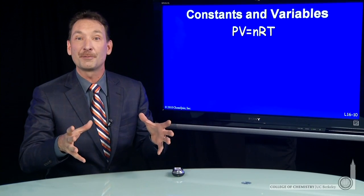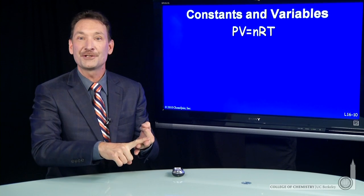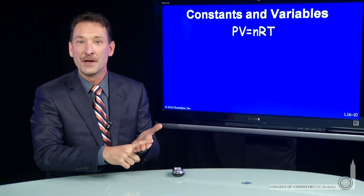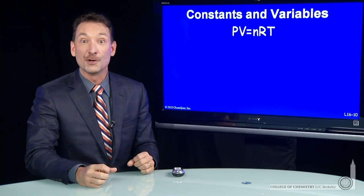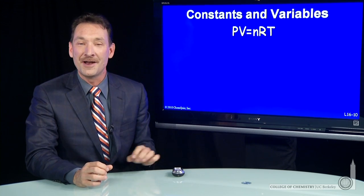Let's look at the relationship between the macroscopic properties for a sample of gas: the pressure, the volume, the temperature, the number of moles of gas. We can combine them all into one neat expression, the ideal gas law, PV equals nRT.